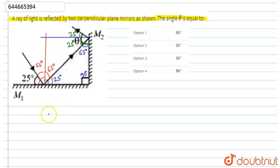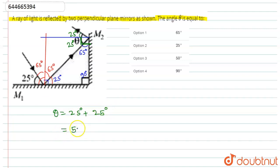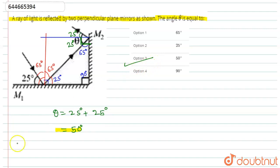So theta is 25 plus 25, which equals 50 degrees. This is the required answer for this question. According to the options, option three is the right answer. Hope this answers your question, thank you.